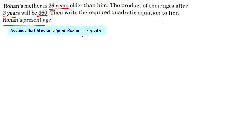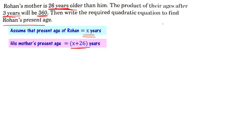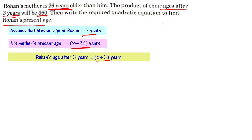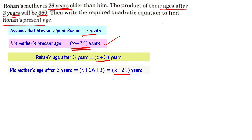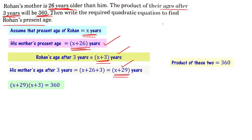Rohan's present age is x years, and Rohan's mother's present age is x plus 26, since she is 26 years older than Rohan. After three years, Rohan's age will be x plus 3. His mother's age after three years will be x plus 26 plus 3, which equals x plus 29 years. The product of their ages after three years equals 360, so: (x + 3)(x + 29) = 360.